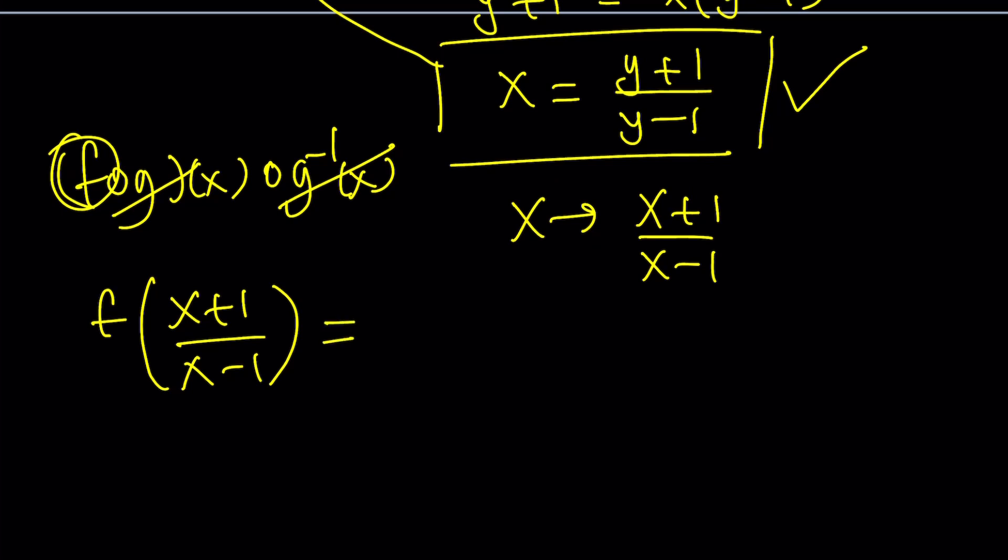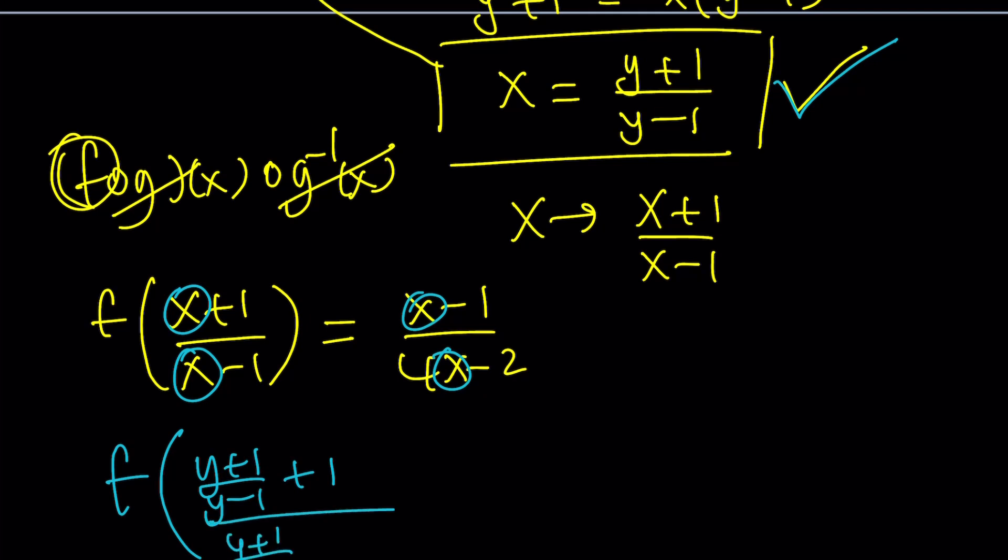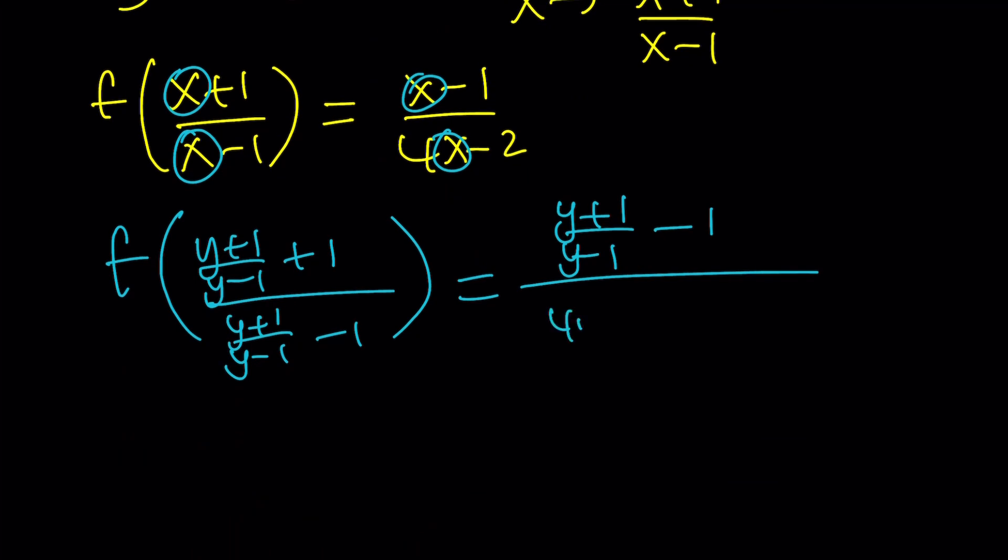And on the right hand side obviously we have (x-1)/(4x-2). So here's what we're going to do. We're going to replace these x's with something, right? On both sides. And that is given here. So x is going to be (y+1)/(y-1) + 1 divided by (y+1)/(y-1) - 1. And on the right hand side I have (y+1)/(y-1) - 1, and then at the bottom you're going to multiply that by 2. So it's going to be 4y+4 divided by y-1. I just multiply this by 4 minus 2.